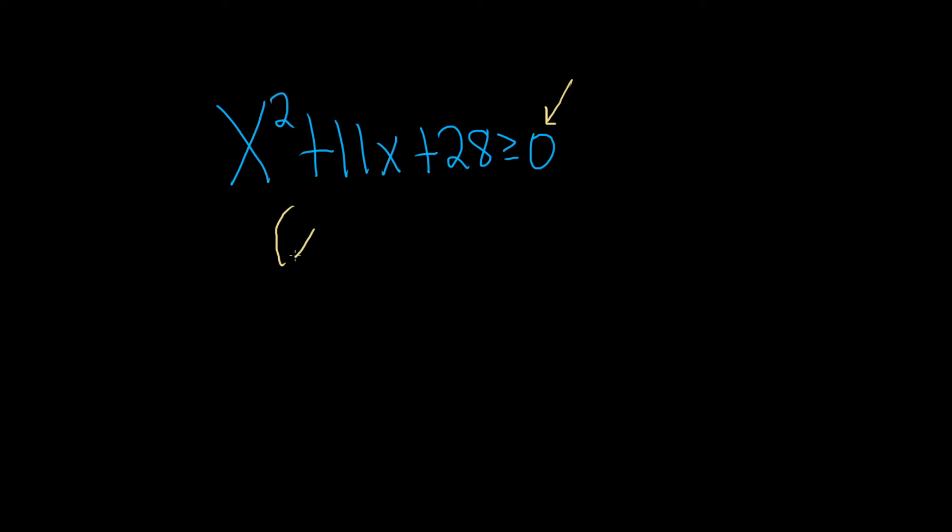Let's try it. So we have (x + )(x + ) greater than or equal to 0. So we need two numbers that multiply to 28 and add to 11. I think 4 and 7 will do the job, because 4 times 7 is 28, and 4 plus 7 is 11.